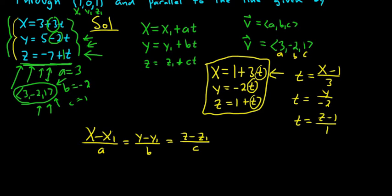So x minus x₁, so x₁ was 1. So we get (x - 1). a is 3. So /3 equals y minus 0. So I'll just put y. b is negative 2.